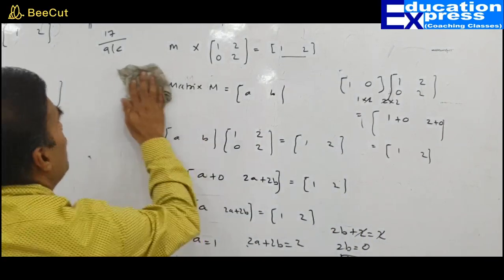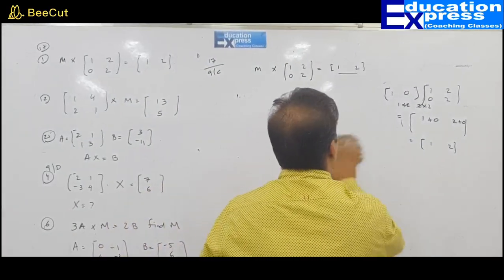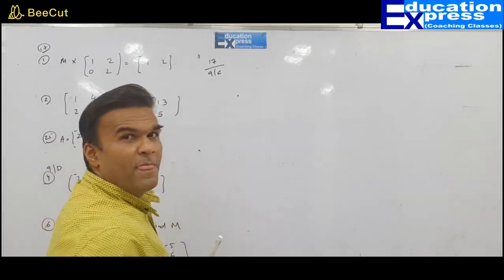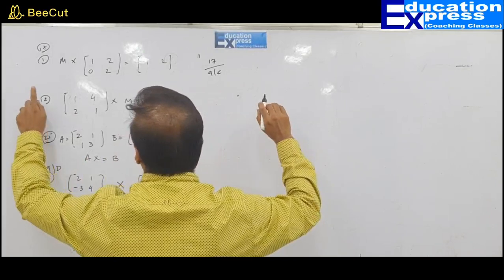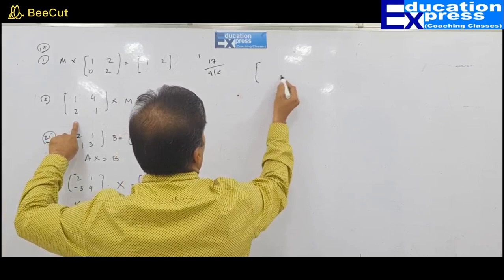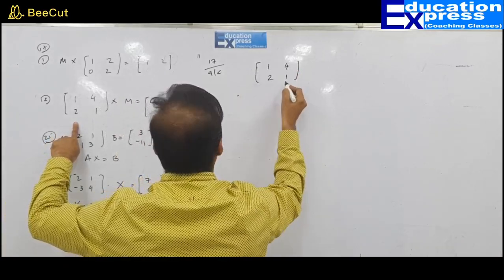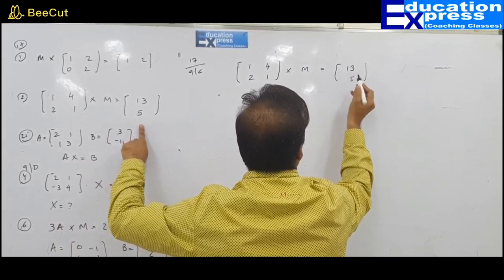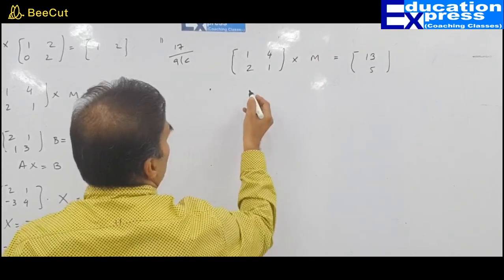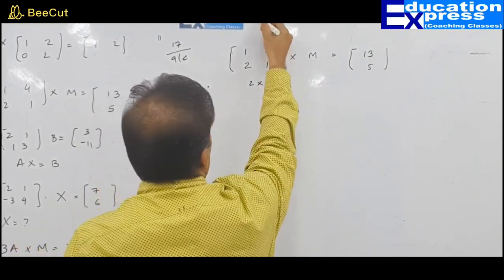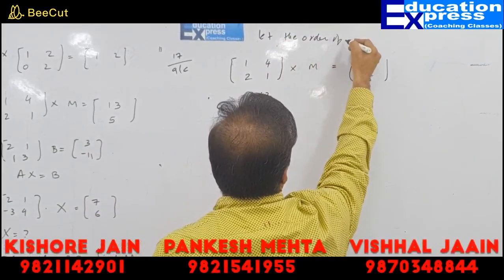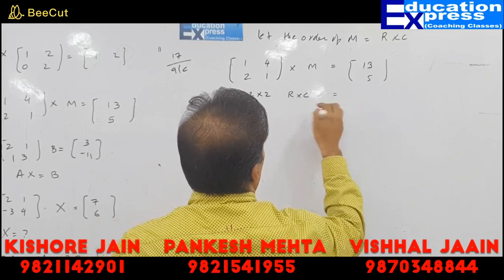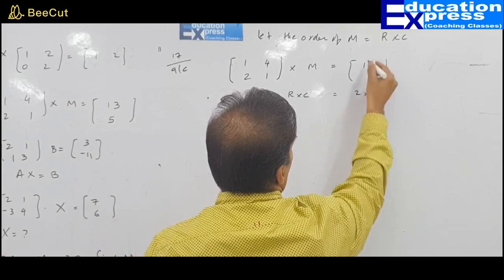Let us have a few more examples of the same type. This was question number 17. My second question is question 9C number 17, second part. The question is: 1, 4, 2, 1 multiplied by matrix M, and the resulting matrix is 13 and 5. We don't know the order of matrix M. The order of this matrix is 2 multiplied by 2. Let the order of M be row into column.